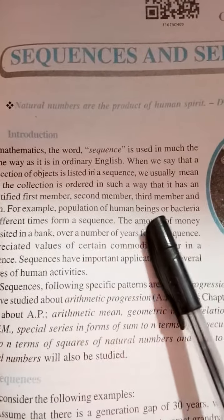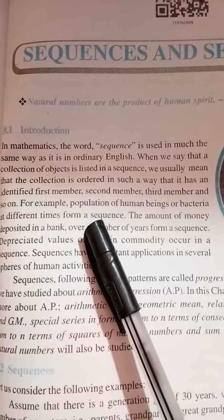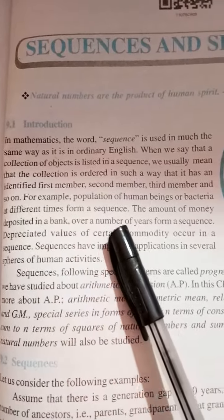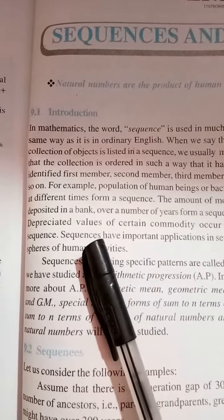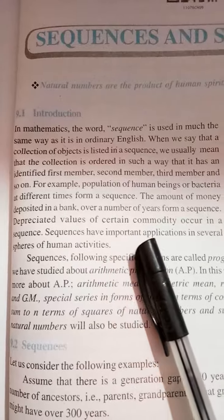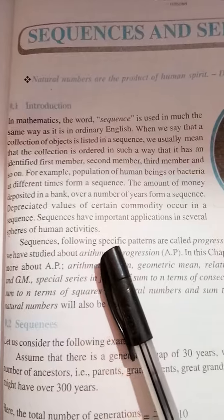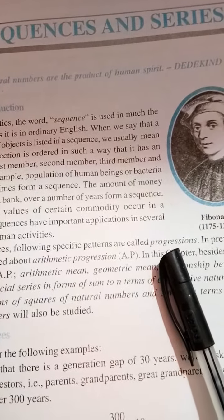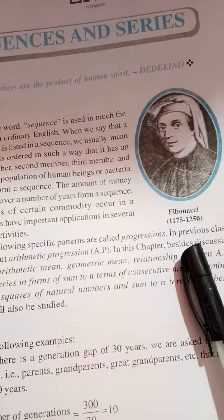The population of human beings or bacteria at different times forms a sequence. The amount of money deposited in a bank over a number of years forms a sequence. The depreciated value of a certain commodity also occurs in a sequence. Sequences have important applications in several spheres of human activities. Sequences following a specific pattern are called progressions.